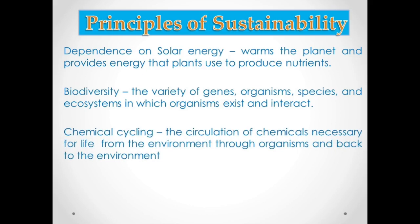The last principle is chemical cycling. Chemical cycling is the circulation of chemicals necessary for life from the environment through organisms and back to the environment. It is also called nutrient cycling, and includes the carbon cycle, water cycle, phosphorus cycle, sulfur cycle, and nitrogen cycle. We will talk about these in more detail in the environmental science chapter.